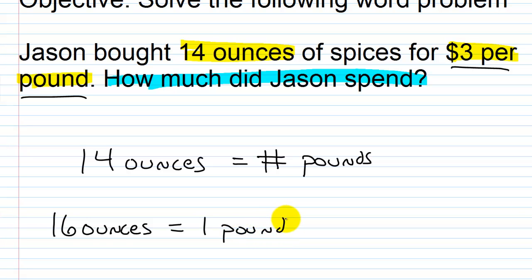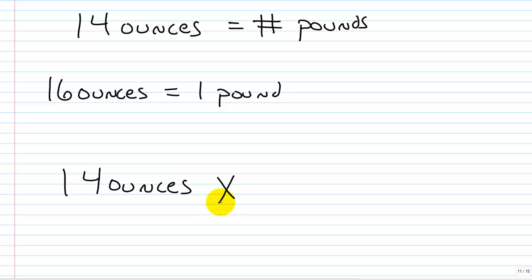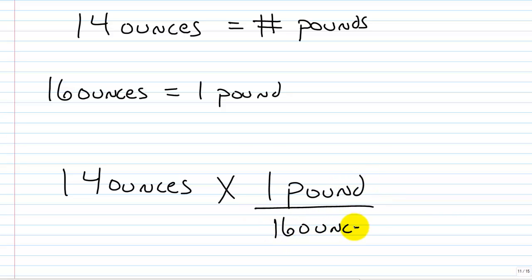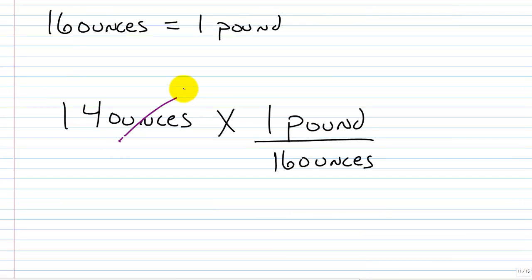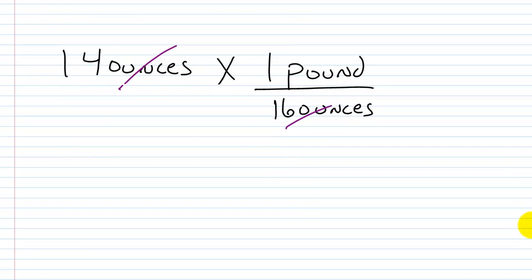To go from ounces to pounds, we have 14 ounces. You want to put the units you want to end up with in the numerator. We want to end up with pounds, so we put one pound in the numerator over 16 ounces in the denominator. These units will cancel, and we end up with 14 divided by 16.